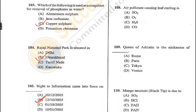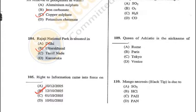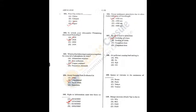Question 109: Queen of the Adriatic is the nickname of Venice, Italy — D is the correct answer. Question 110: Mango necrosis (black tip) is due to sulphur dioxide. It is a disease mainly found in orchards. Q110 = A, Q109 = D, Q108 = A.